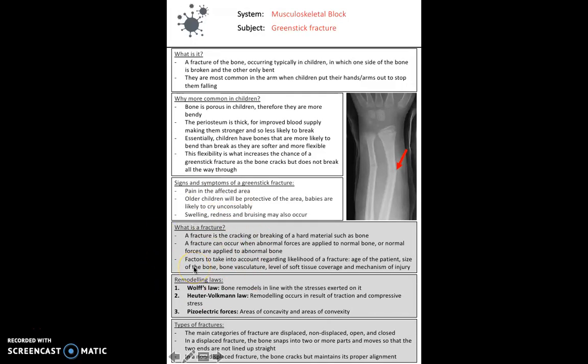With regards to fractures generally, a fracture is the cracking or breaking of a hard material such as bone. A fracture can occur in two ways: when we have abnormal forces applied to normal bone or normal forces applied to abnormal bone. There are a few remodeling laws you should be aware of. Wolff's law states that bone remodels in line with the stresses exerted upon the bone. And the Hutter-Volkman law is remodeling occurs in result of traction and compressive stress.